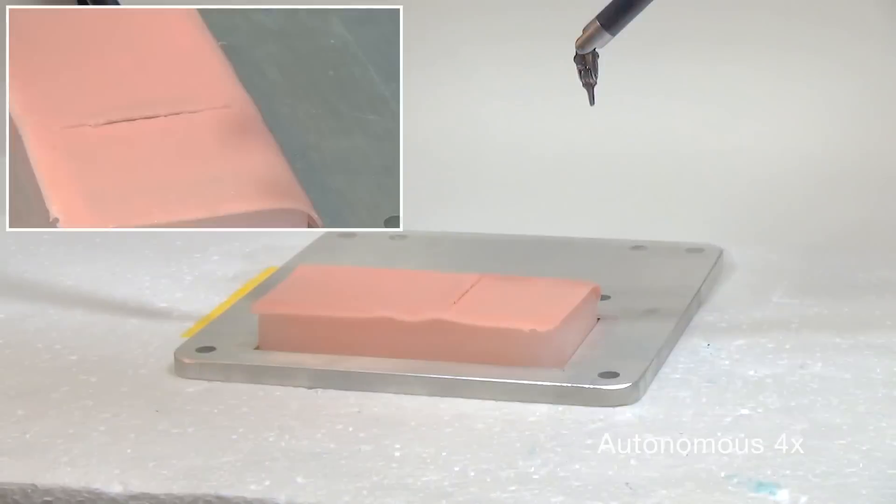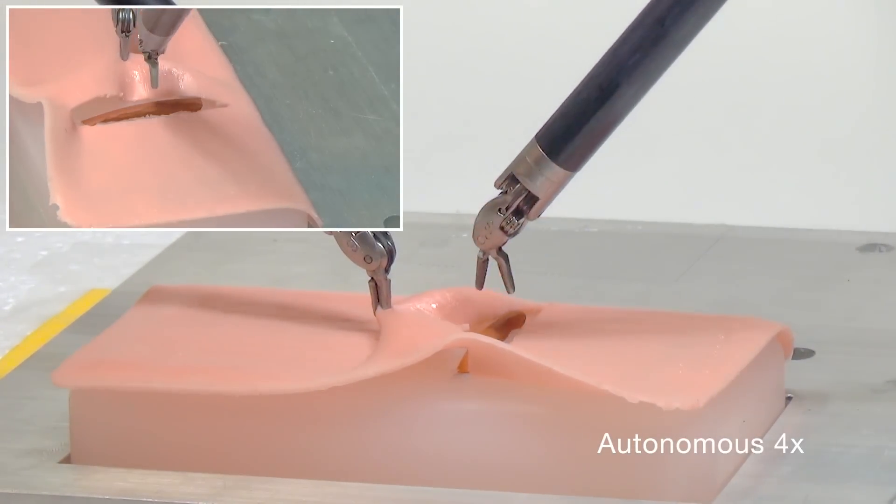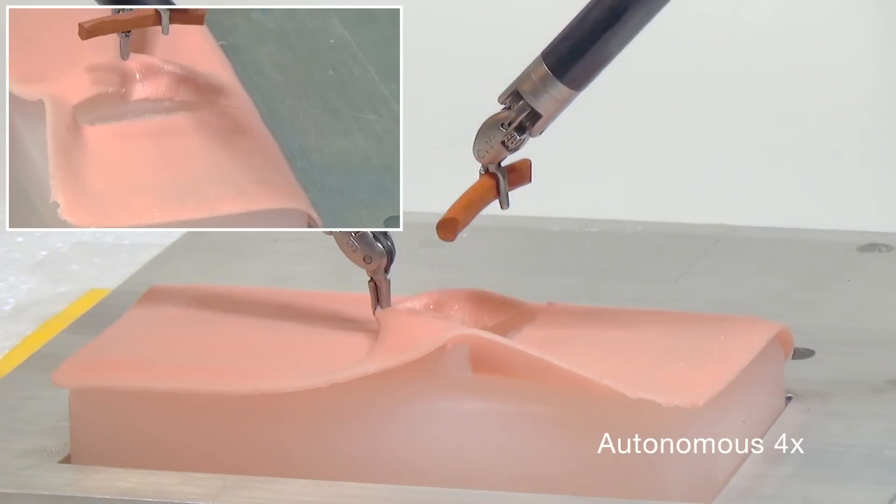The next steps are retraction and tumor debridement. One gripper retracts the skin to expose the tumor, while the second gripper reaches in to detach and remove the tumor.